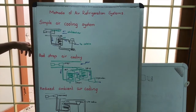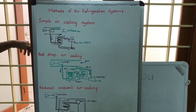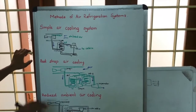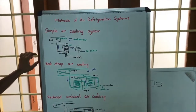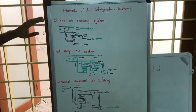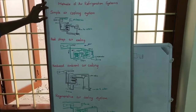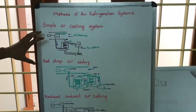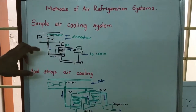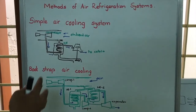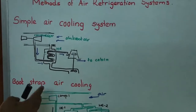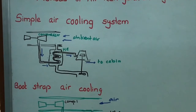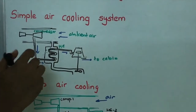We are going to discuss different types of air refrigeration systems and how we achieve refrigeration by using air. This is usually done in aircraft systems. The first one is the simple air cooling system. We will look into the procedures and processes involved, and then see how differences are introduced to achieve other systems.